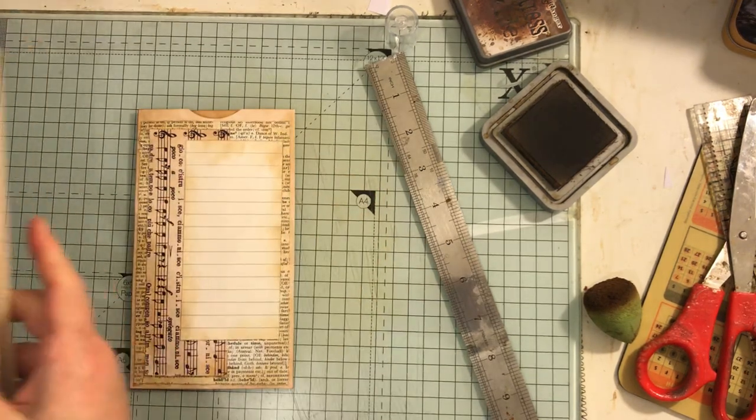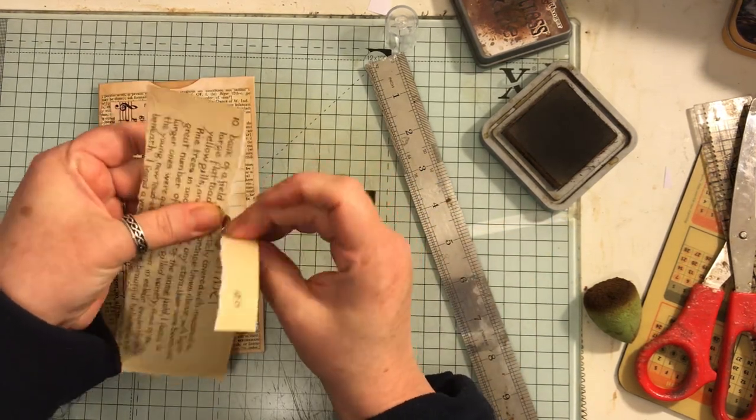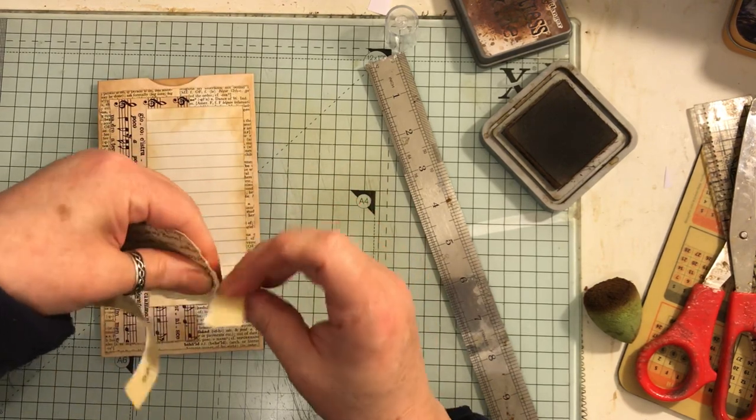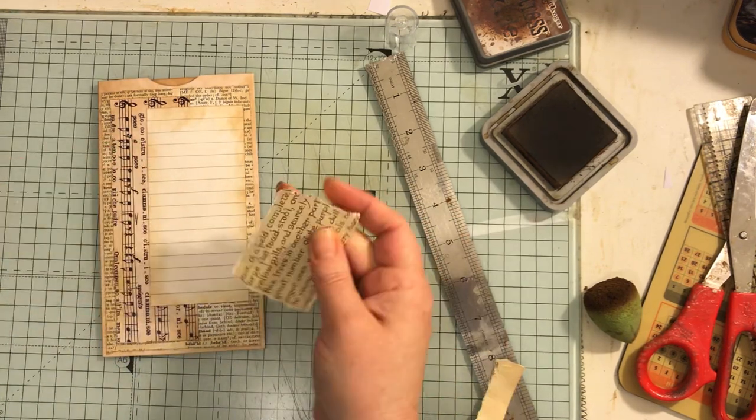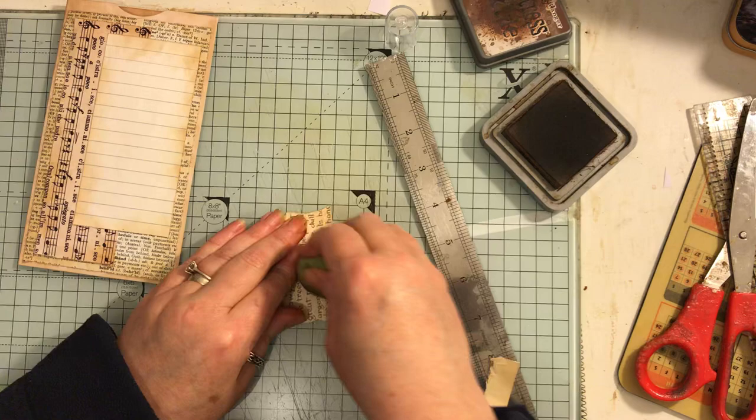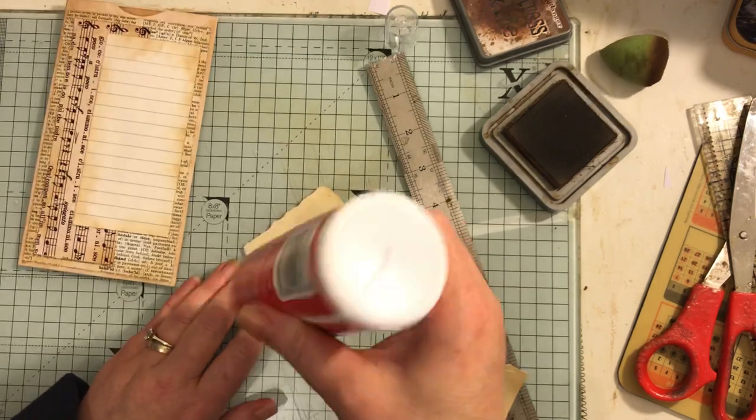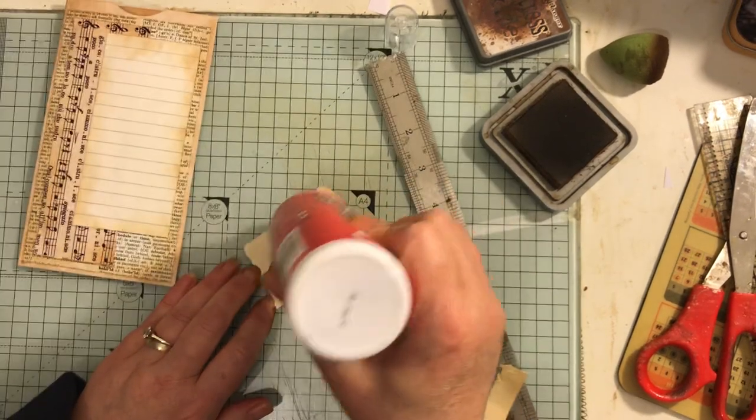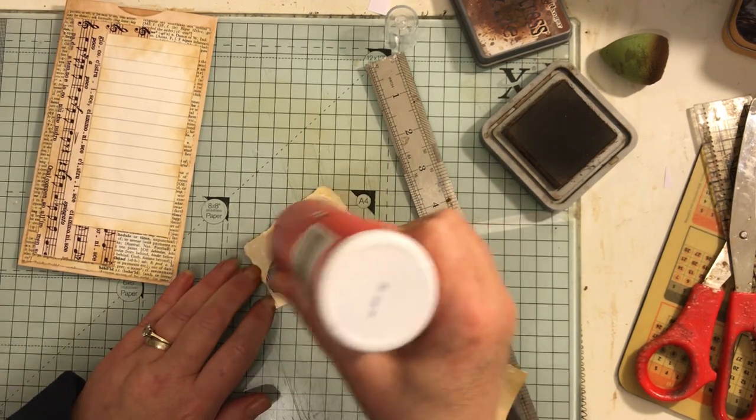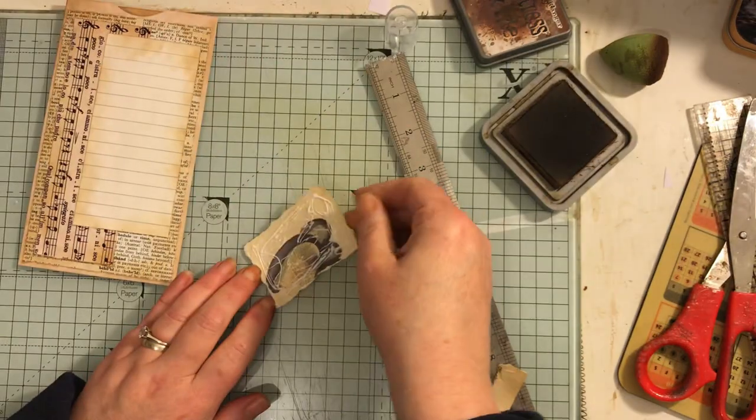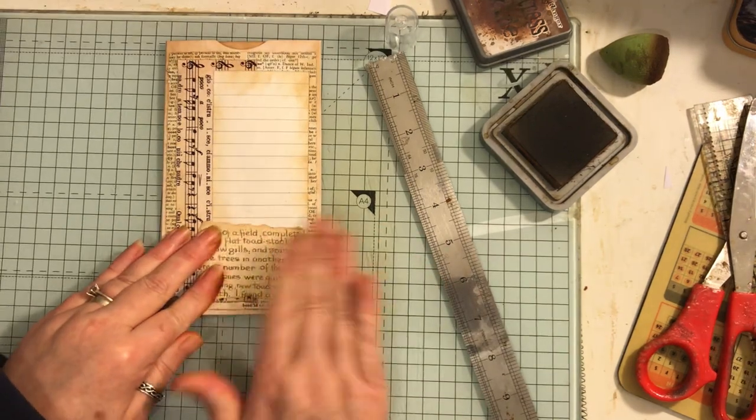Now I had a piece of Edith Holden, there it is. I'm just going to tear a piece of that, probably about there. Ink that up as well. Glue that down.